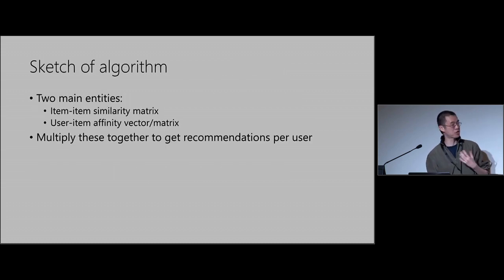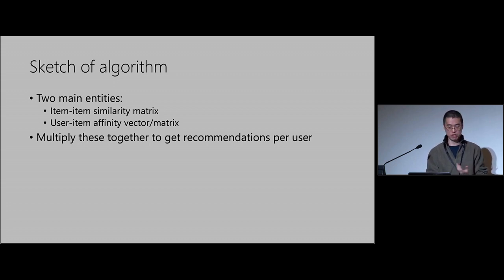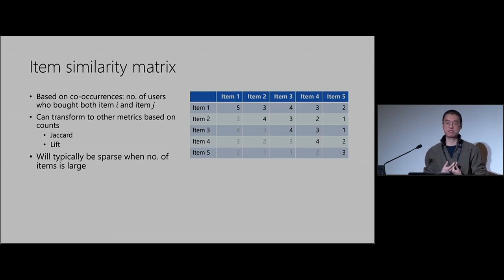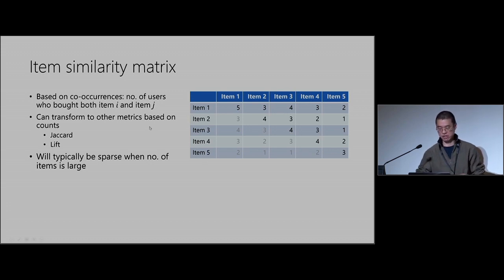I'll give a quick sketch of the algorithm, which involves just two main entities that you combine to get recommendations. The first is the similarity matrix, based on co-occurrences: how many people bought item I and item J. So you might have five people who bought item one, three people who bought item one and item two, four people who bought item one and item three, and so on — all based on counts of transactions.